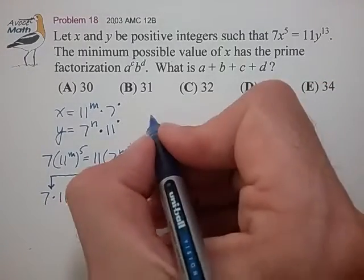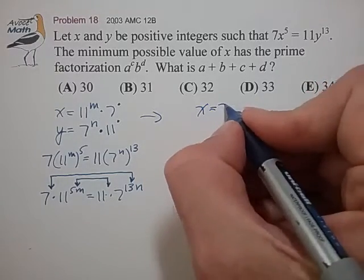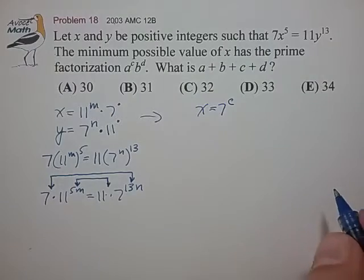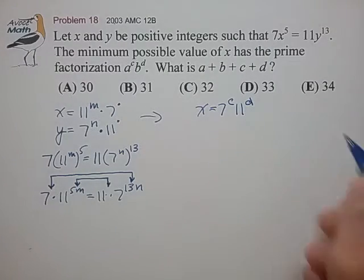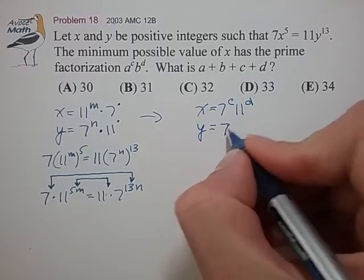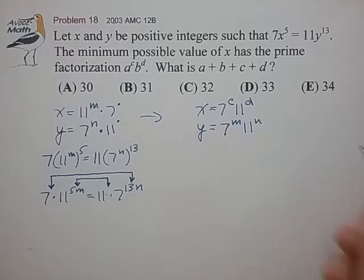Let's try to expand this a little bit and let x equal 7 to some exponent c, kind of what they suggest up here, times 11 to some exponent d. And let's let y equal kind of the same form but now with different exponents, so m and n not related to the first m and n.